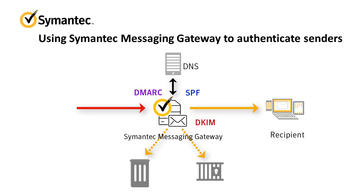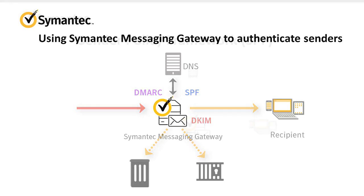In any case, sender authentication is one of your first lines of defense against spam and phishing attacks. Now let's take a look at SPF, DKIM, and DMARC sender authentication methods and how they work.